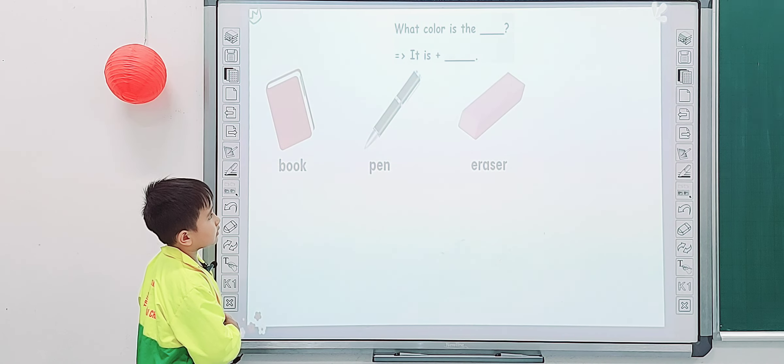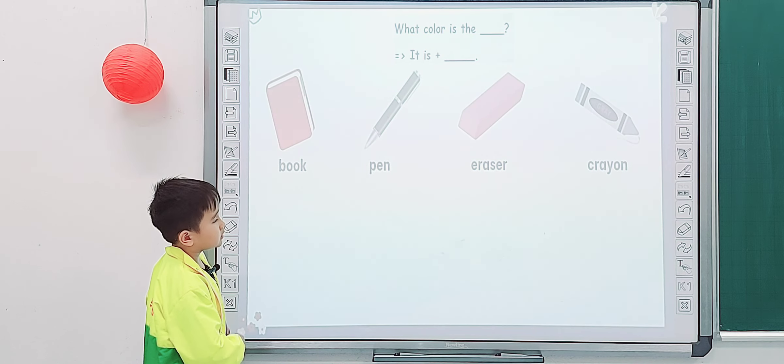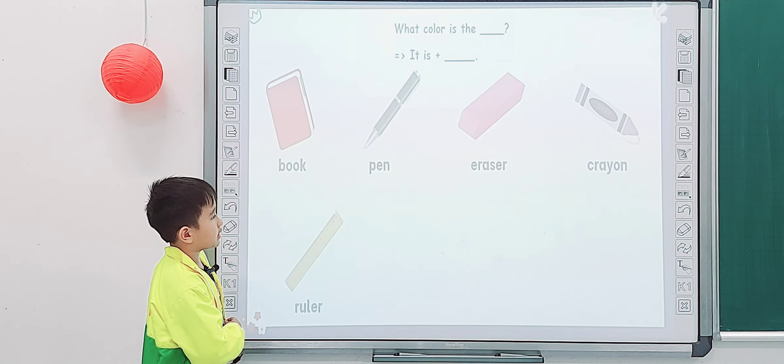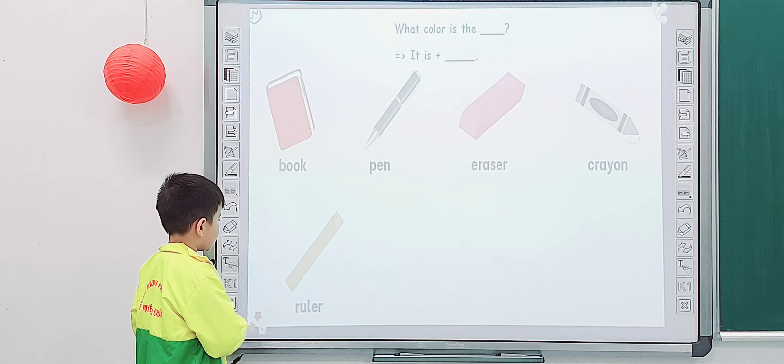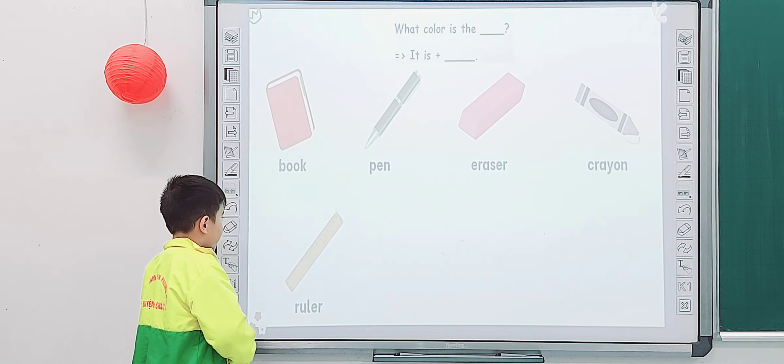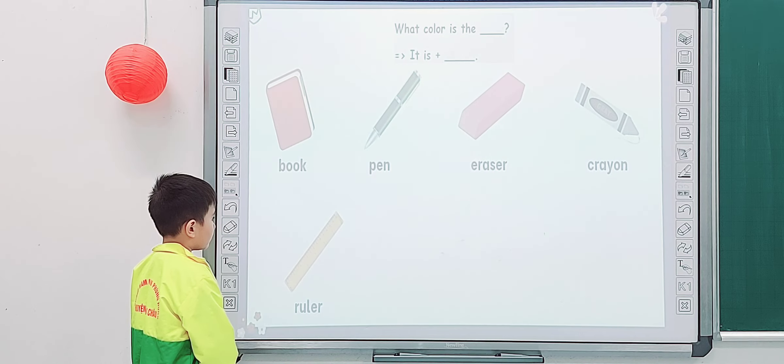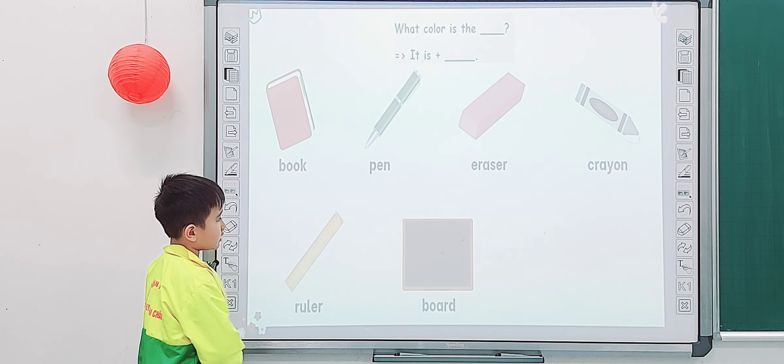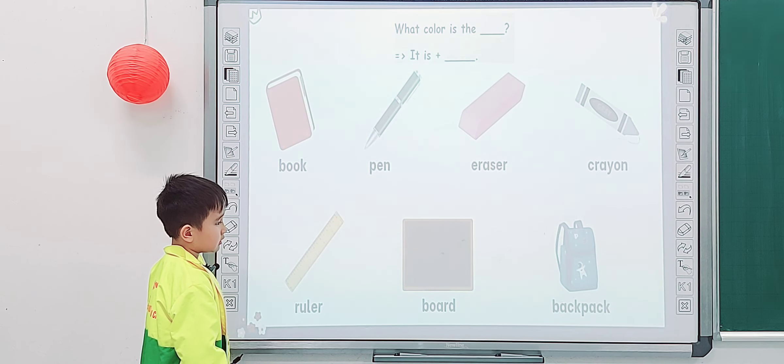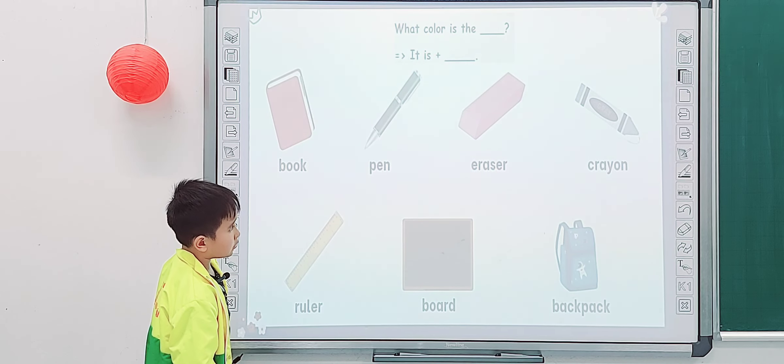What color is the eraser? It is pink. And what color is the crayon? It is green. And what color is the ruler? It is yellow. What color is the board? It is black. What color is the backpack? It is blue.